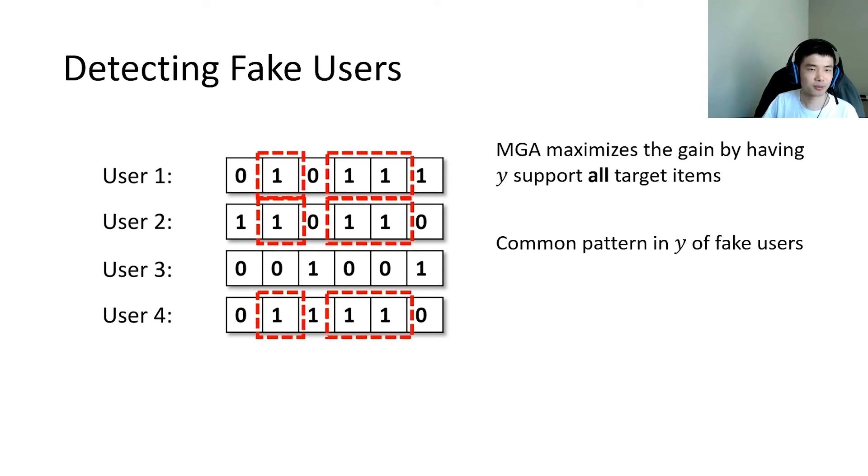Hence, we can detect fake users via frequent item set mining, where we find the item sets that are supported together by abnormally many users and mark these users as fake ones. Their reports will be excluded from the aggregate step.